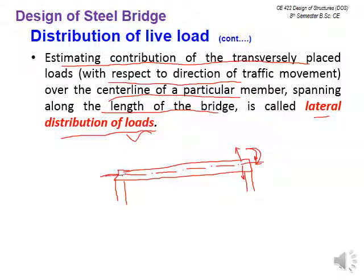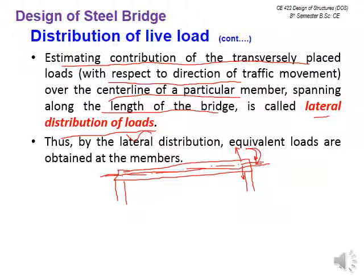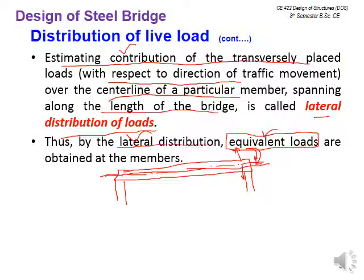The load is transferred along the longitudinal direction of the member — whether girder, stringers, or bridge deck itself. Through lateral distribution, equivalent loads are obtained at the member. These equivalent loads represent the estimated contribution of transversely placed loads in the longitudinal direction. The equivalent loads are placed along the center line of the member spanning along the length of the bridge.